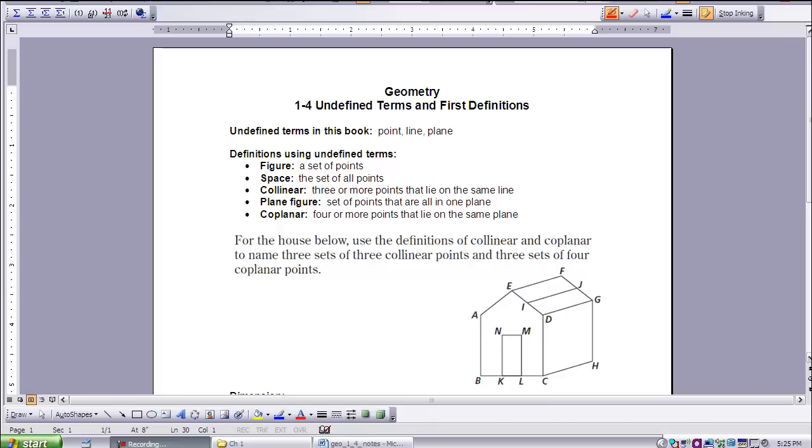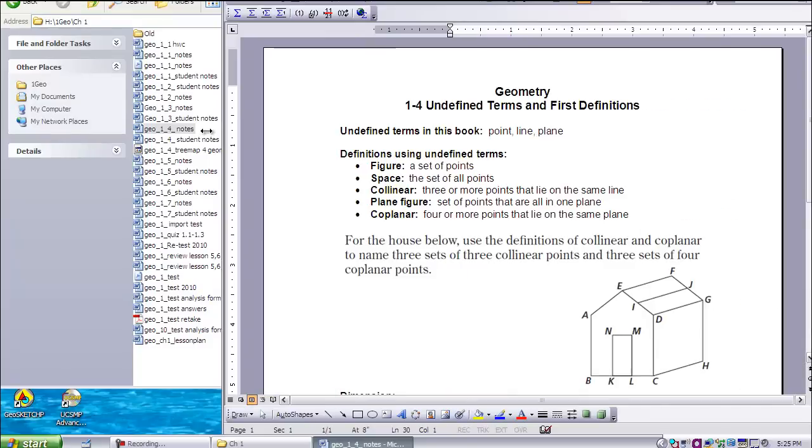In this book, following a tradition begun by the German mathematician David Hilbert about a hundred years ago, we chose point, line, and plane as undefined terms. So the undefined terms in this book are point, line, and plane.